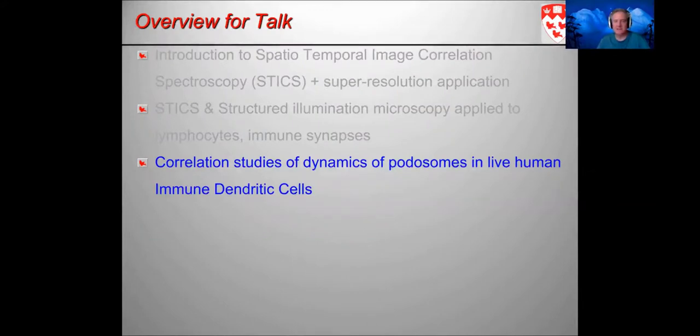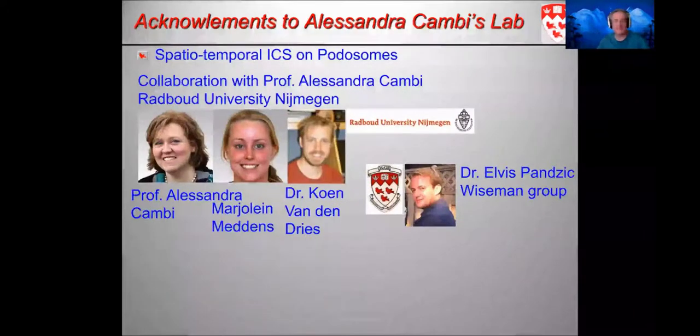The second research application to finish this talk involves looking at another type of structure in human immune dendritic cells, and that is called the podosome. This is a collaboration done with Professor Alexander Cambi from Radboud University in Nijmegen in the Netherlands, a graduate student Marilyn Neijing, and Dr. Koen van den Dries, long-standing collaboration with them. And again, I acknowledge Elvis, my former group member who did programming and some of the analysis involved in this.